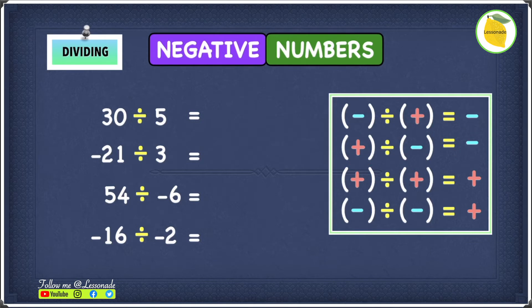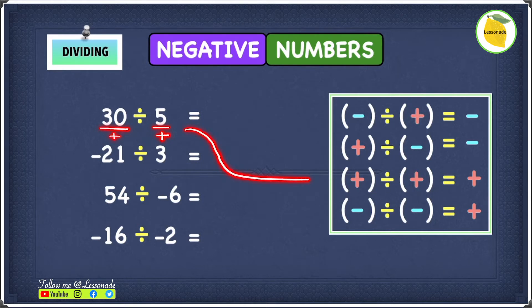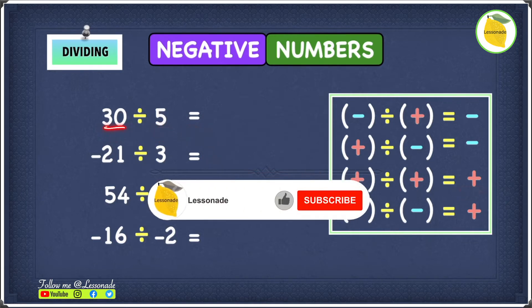So let's start with the first example, which is 30 divided by 5. In this example, they're all positive — 30 is positive and 5 is positive. When you have two of the signs that are the same, that means your answer will be positive. So 30 divided by 5 will give us an answer of 6.